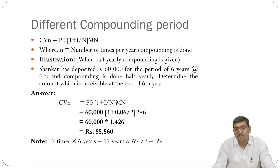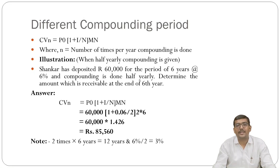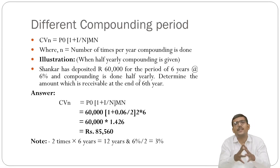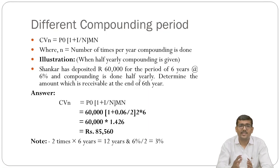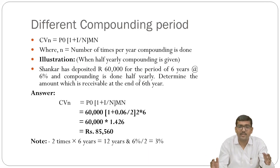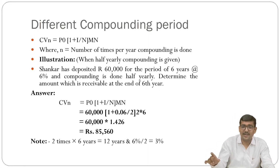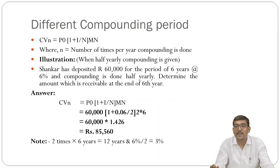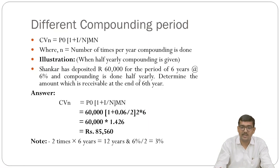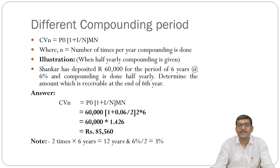For different compounding periods, the formula is: CVₙ = P₀ × (1 + i/m)^(m×n), where m is the number of times compounding is done per year. When half-yearly compounding is given, m = 2; for quarterly, m = 4; and for yearly compounding it is the same as the single amount formula. Let us illustrate with an example.